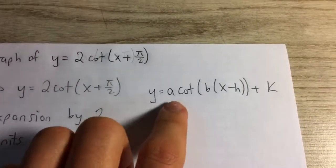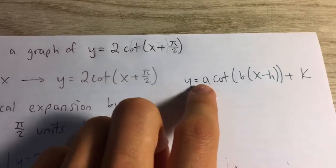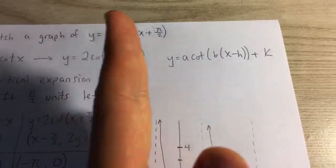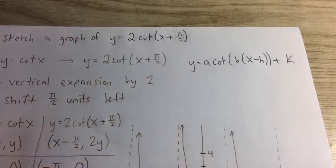In this case all we have is an a value which represents the vertical stretch or vertical expansion or compression, and an h value which represents the horizontal shift or the phase shift.